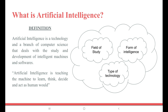Artificial Intelligence is a technology and a branch of computer science that deals with the study and development of intelligent machines and software. That means we train a machine to learn, think, decide, and act as a human would.